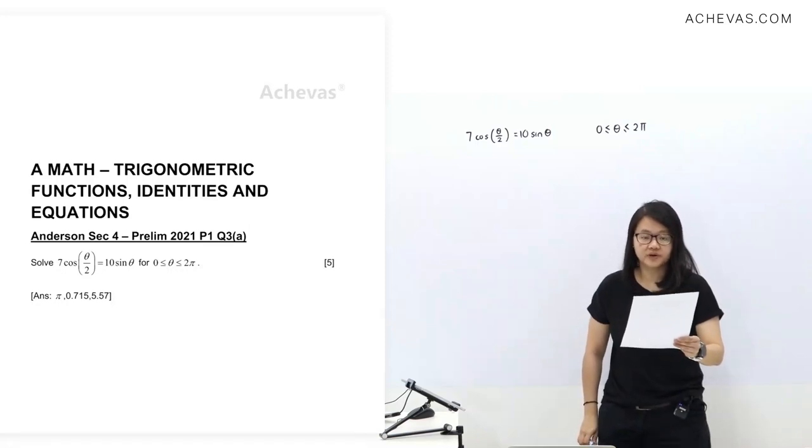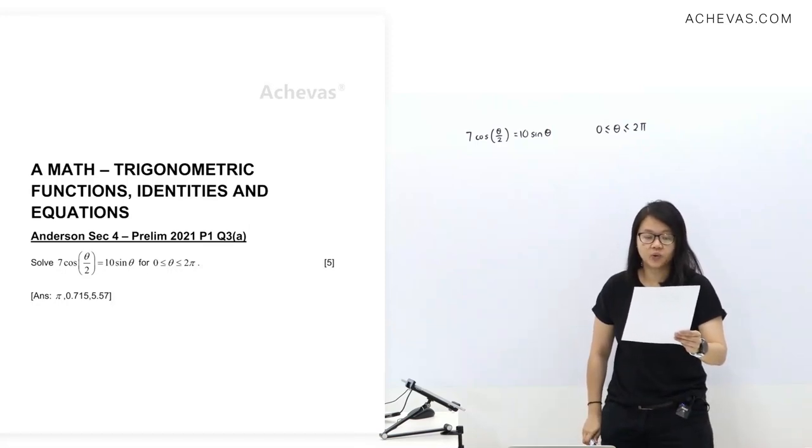We are going to look at Anderson's set 4, Prelim 2021, Paper 1, Question 3a. Solve 7 cos theta over 2 equals 10 sine theta for 0 to 2 pi.